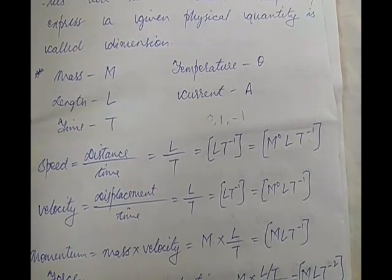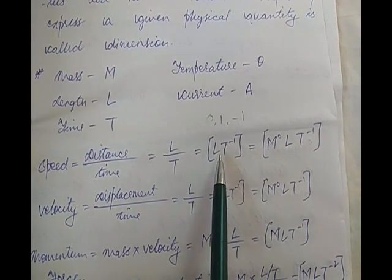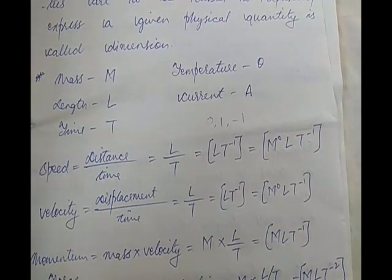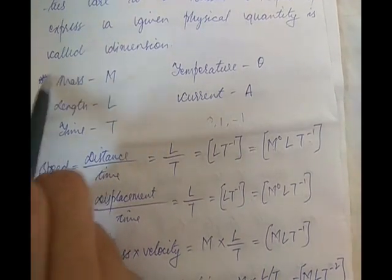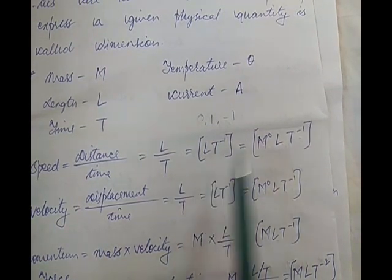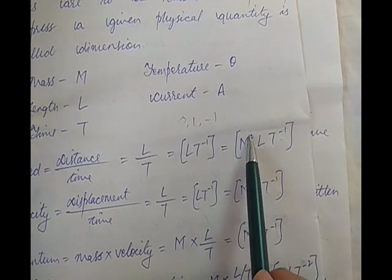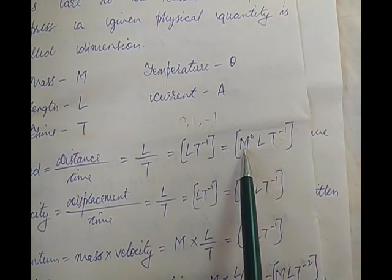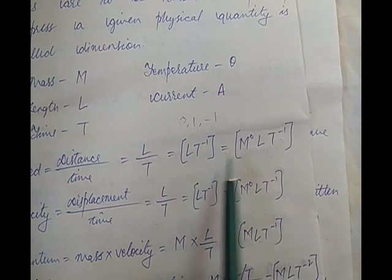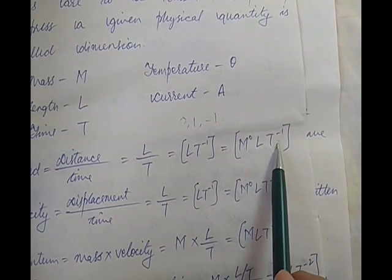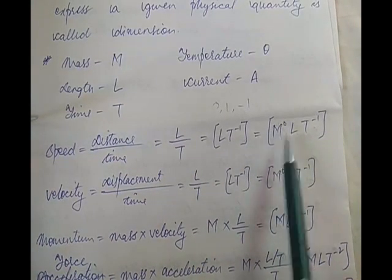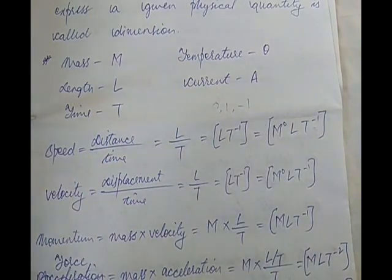What the norm is: we express dimensional formula in terms of mass, length, and time. Generally we express it in terms of these three most fundamental physical quantities. Since mass is not here, we write M to the power 0, L, T inverse — because anything to the power 0 is 1. So M to the power 0, L, T inverse is the dimensional formula for speed.